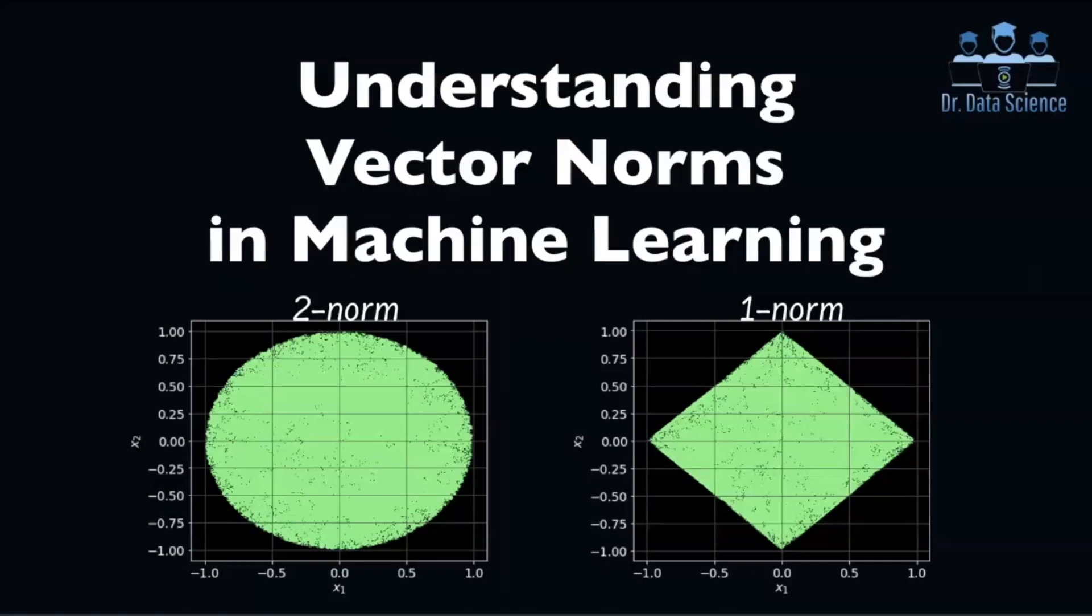You probably have seen these two unique balls, the two-norm and one-norm, when studying about regularization in machine learning and data science. So you'll be able to see how you can plot these things in less than five minutes. So let's get started. And don't forget to like and subscribe.